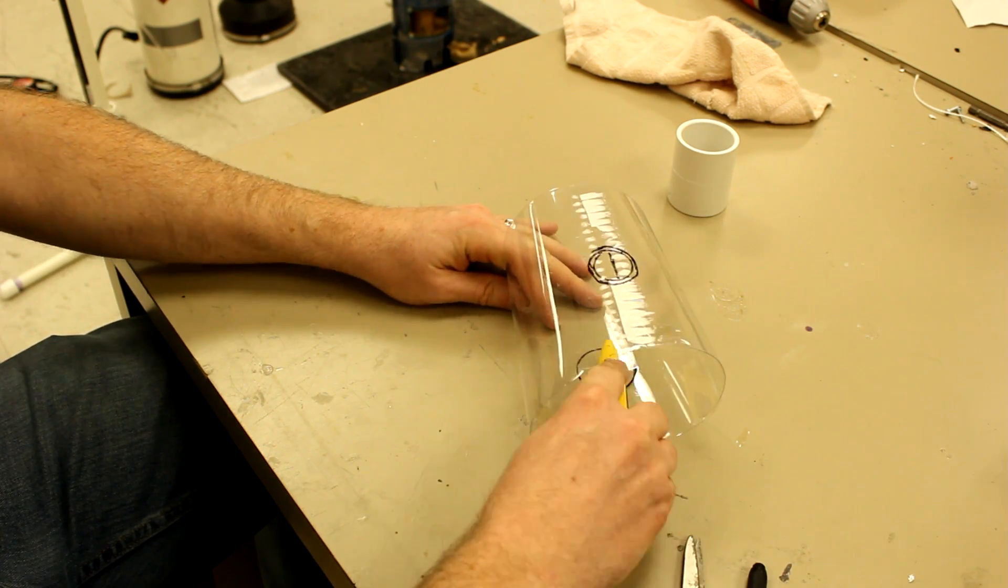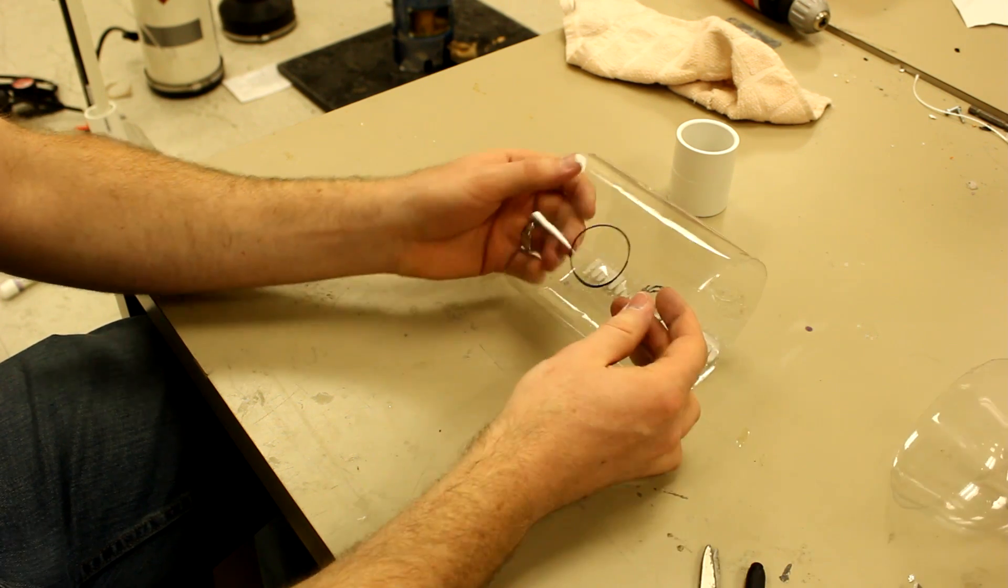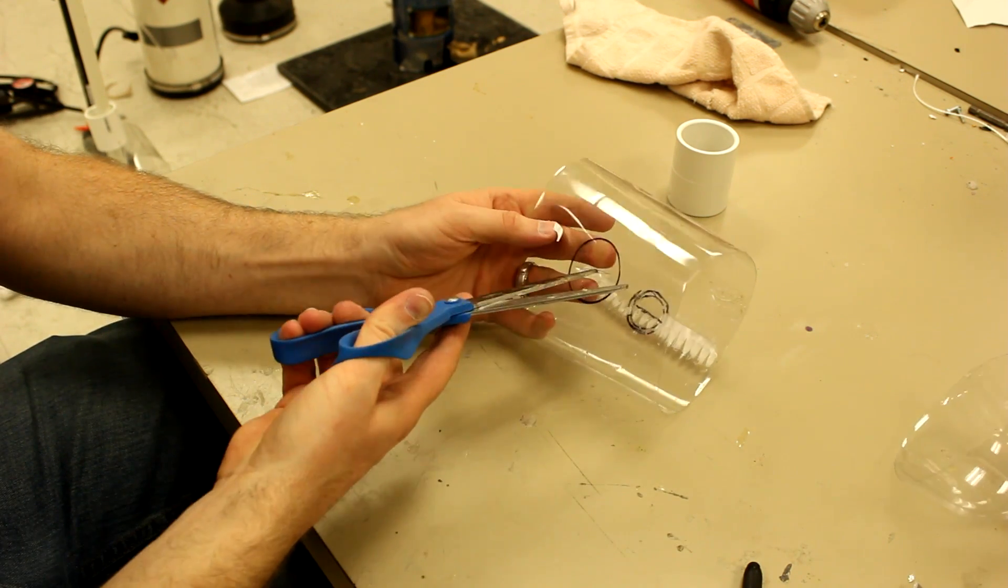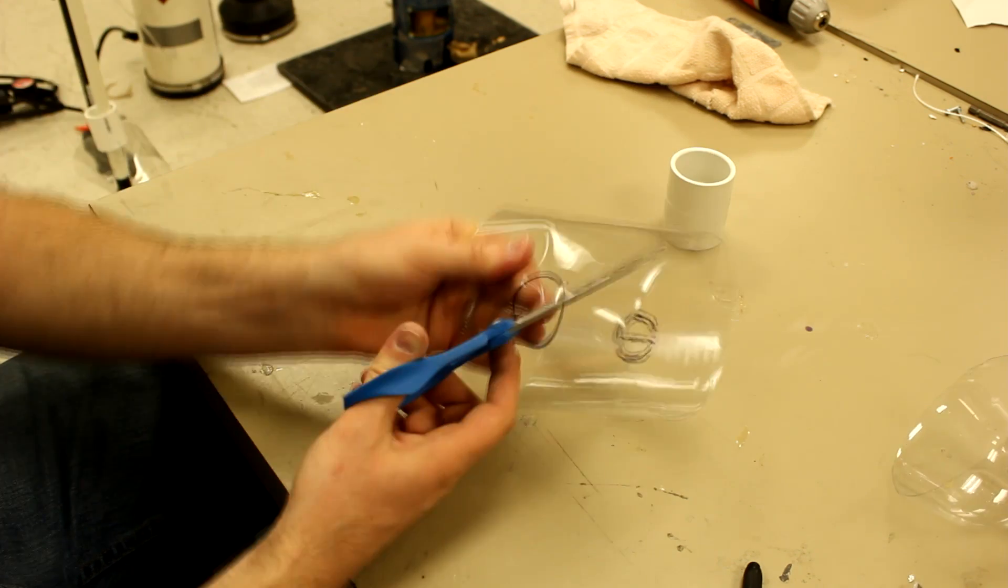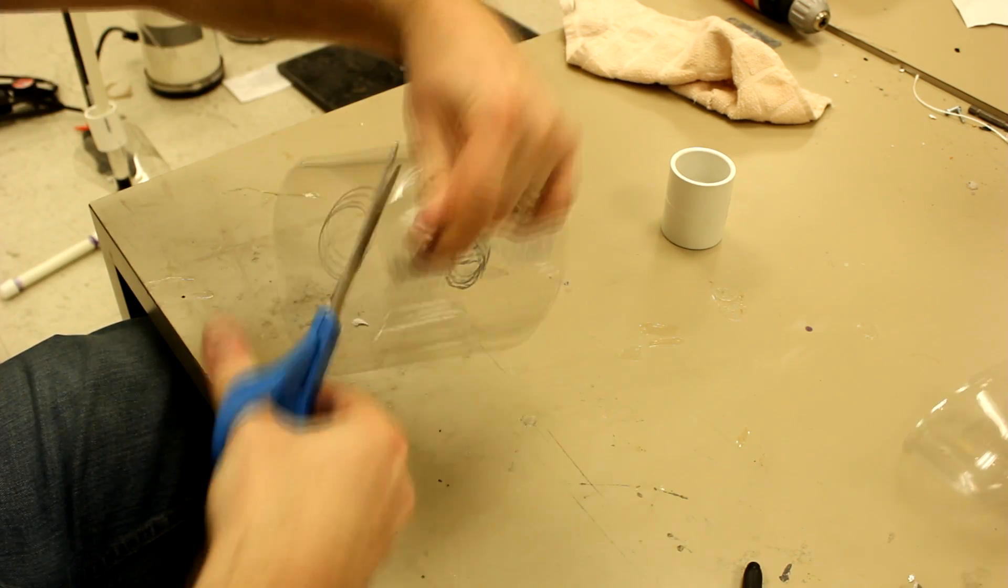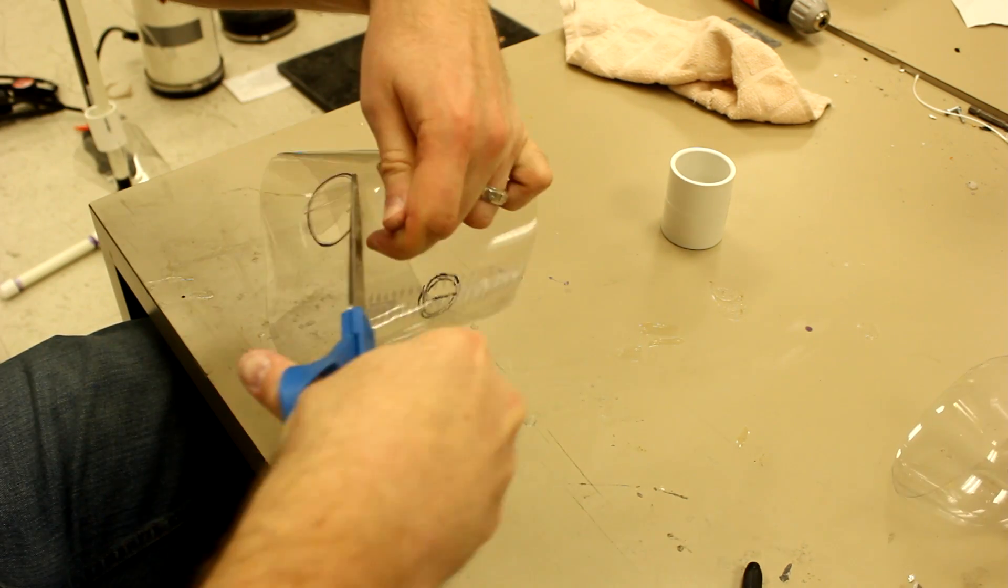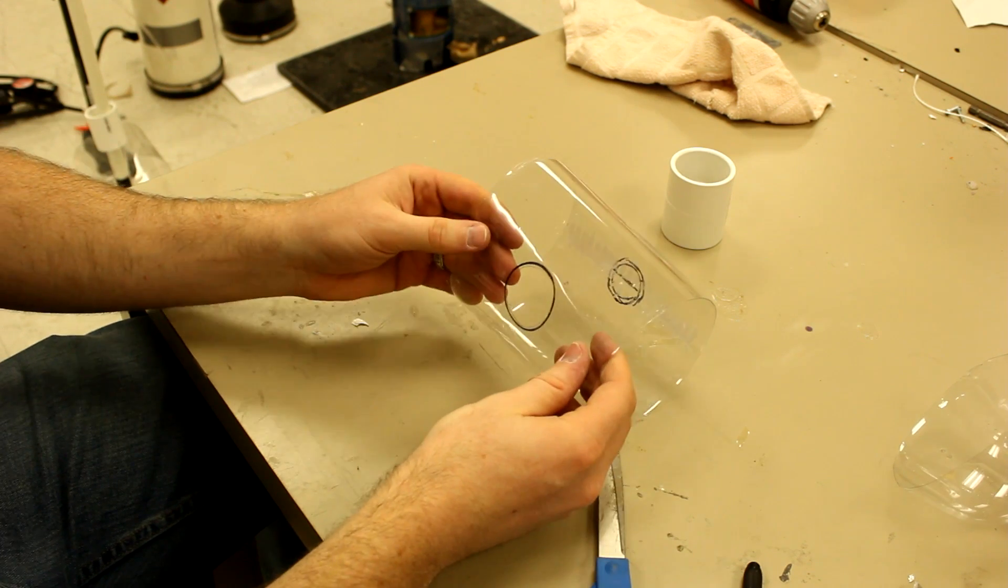As you can see, I put a slit in it by doing this. That will help us get our scissors in. And you're just going to cut this out. And there we go, we have the big hole done.